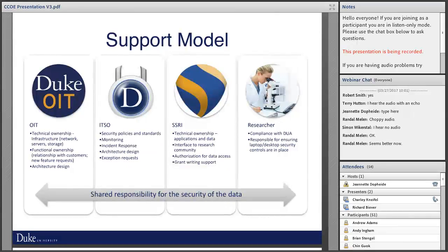In the support model: OIT has technical ownership of the infrastructure - the guts of the service, including network, virtual storage, and virtual machines. The IT Security Office handles monitoring, incident response, and consulting on architecture design. SSRI provides the interface to the research community. And the researcher plays a part as well - security is a shared responsibility. We look for researchers to drive the innovation of what is needed, but also to participate in keeping their data secure.